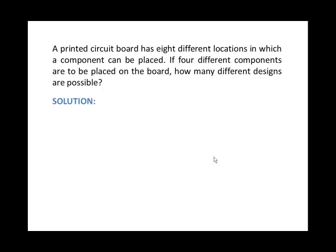Let me read you the example and highlight the important points. A printed circuit board has eight different locations on it and we're going to put a component in these places. We have eight different locations but we have four different components. We want to put these components on the board and figure out how many different designs are possible.